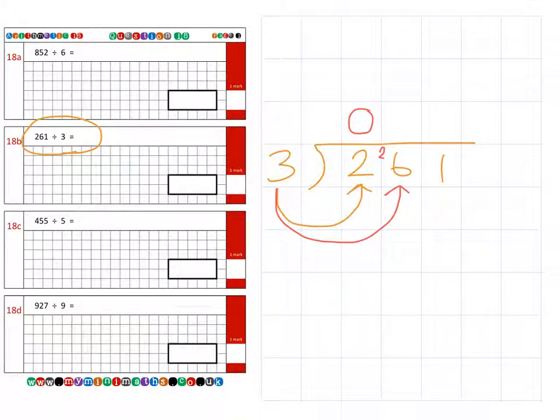Then we have threes into 26, which goes eight - that's 24 - which leaves us two left over. Finally, threes into 21, which goes a nice round seven with no remainders. So the answer to the second question is 87.